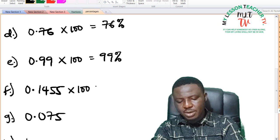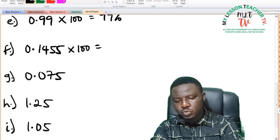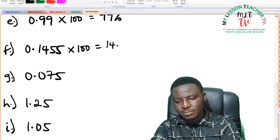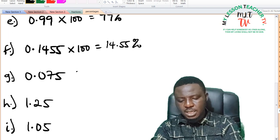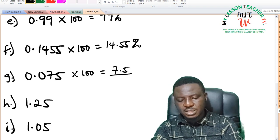And when you multiply this by 100, it gives you 14.55%. And G, you multiply by 100, it gives you 0.5%.